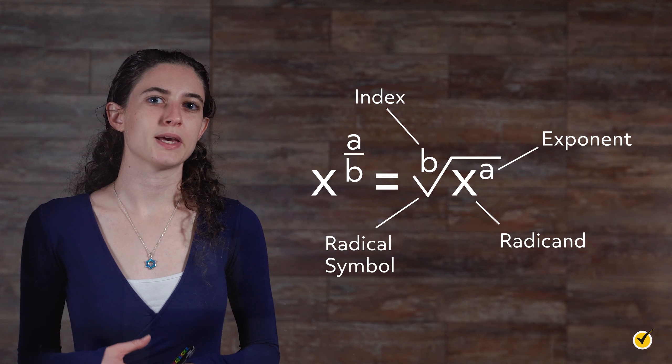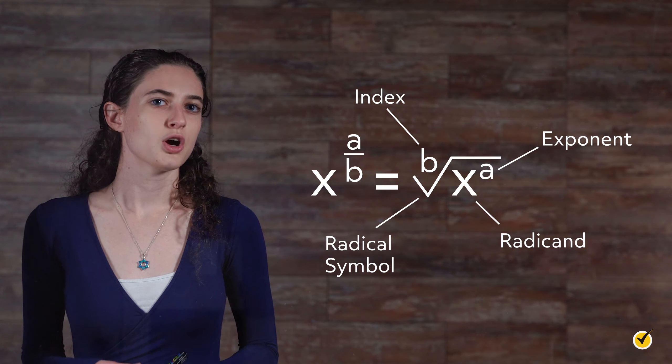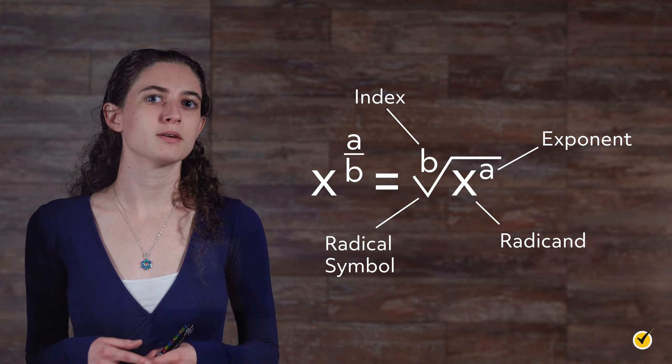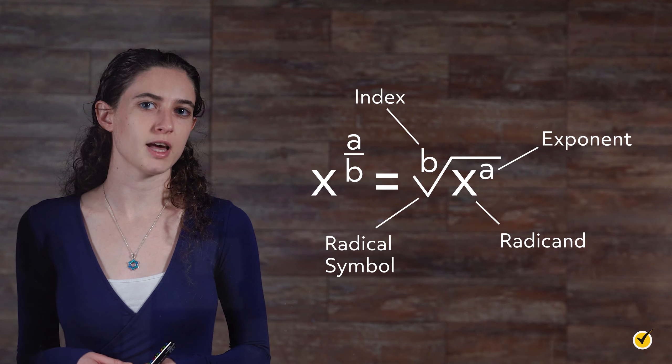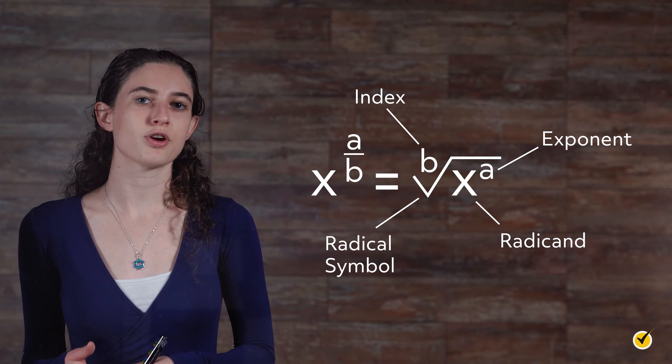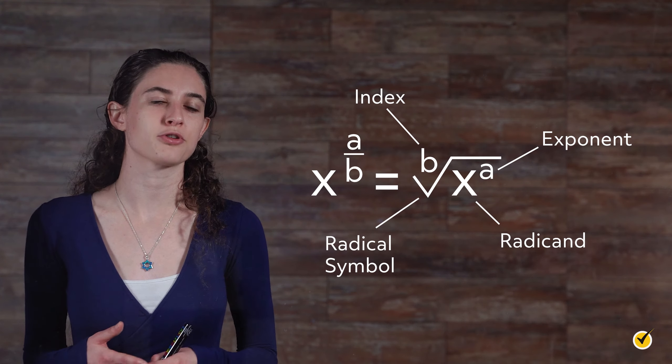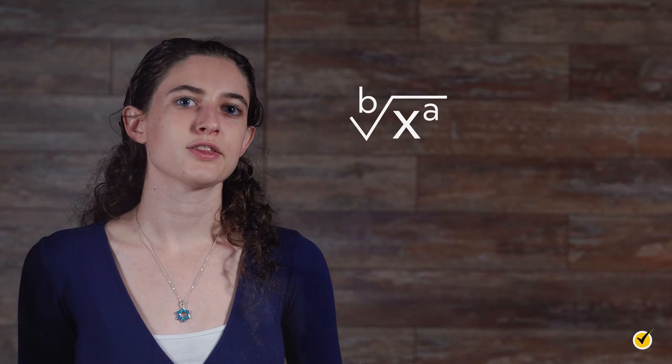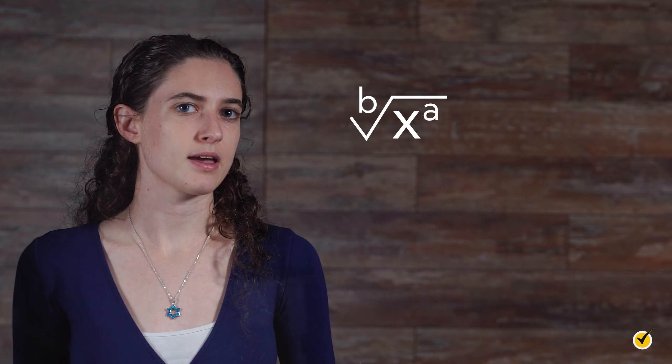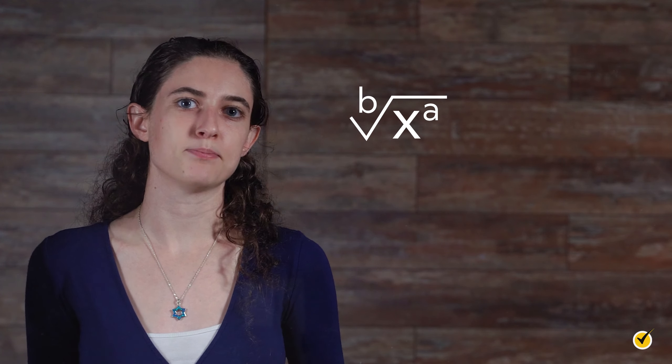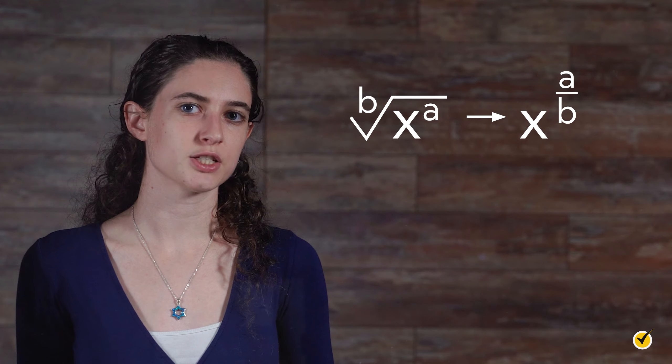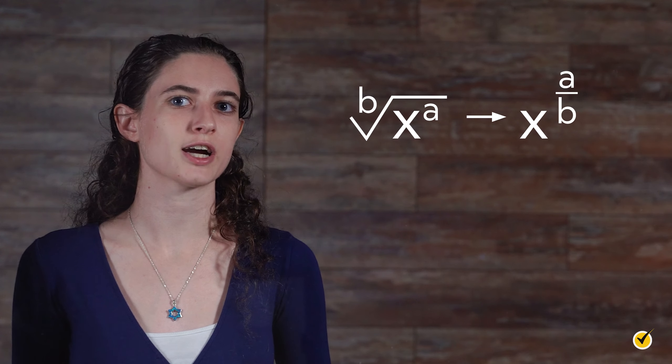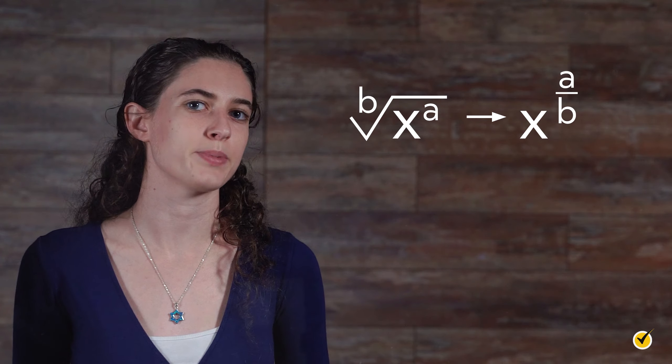A radical is the same as raising a base to a fractional exponent, where the index of the radical becomes the denominator of the fractional exponent, and the exponent of the radicand is the numerator of the fractional exponent. Here is a generalized example. Let's say that the radicand of a radical is x to the a, and the index of the radical is b. This is equivalent to raising the base x to the fractional exponent of a over b. Practicing a few examples will help to make some sense of all this notation and terminology.